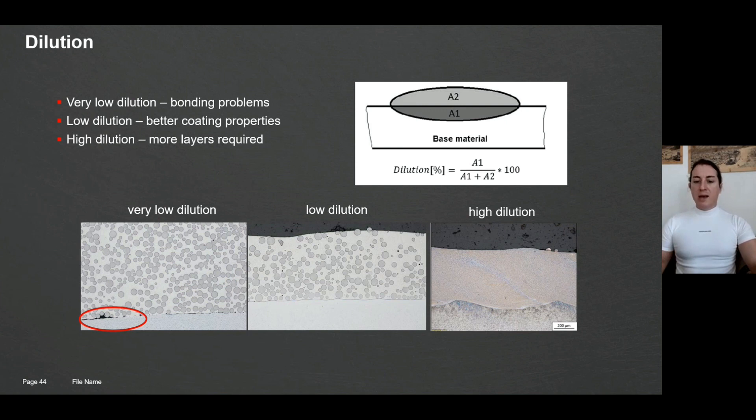And high dilution is dilution values which exceed 10 to 15 percent in my opinion depending on technology which you use, and they can lead to change of properties of your protective material. So to compensate it you would need thicker coatings or you have to put a double layer.